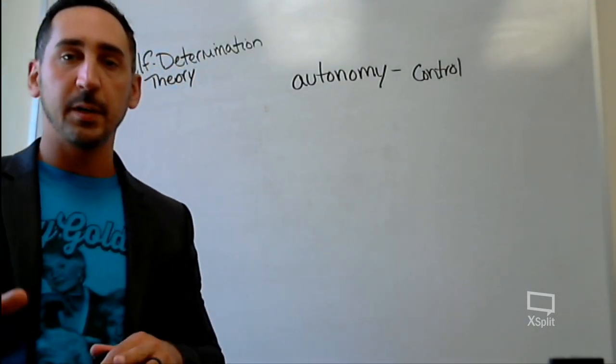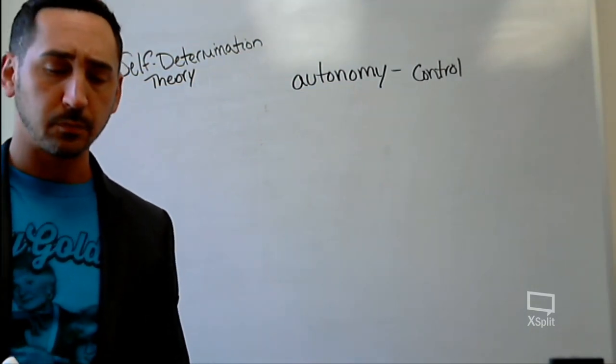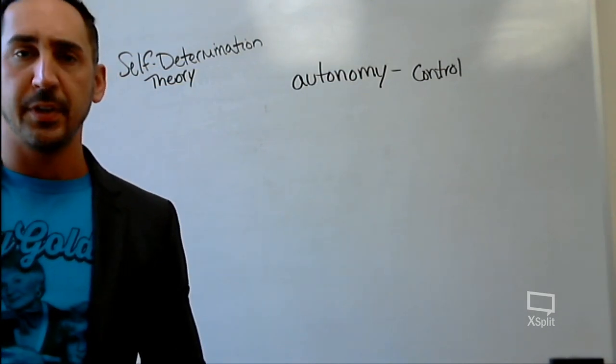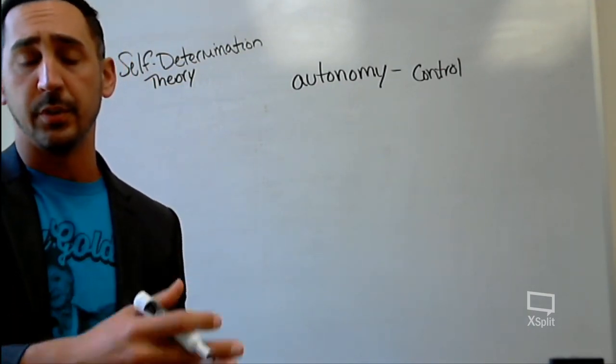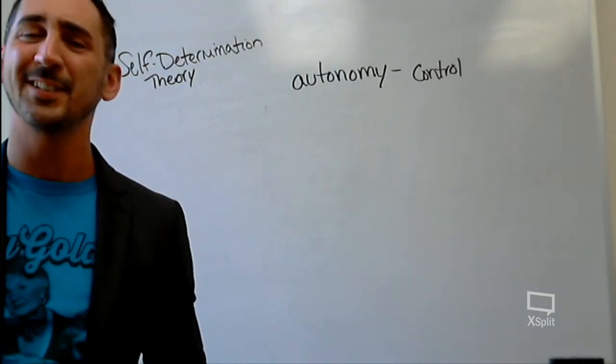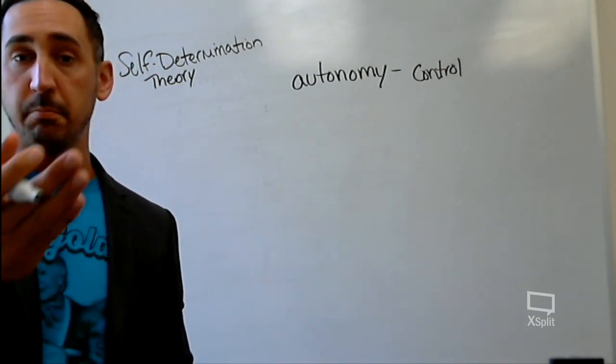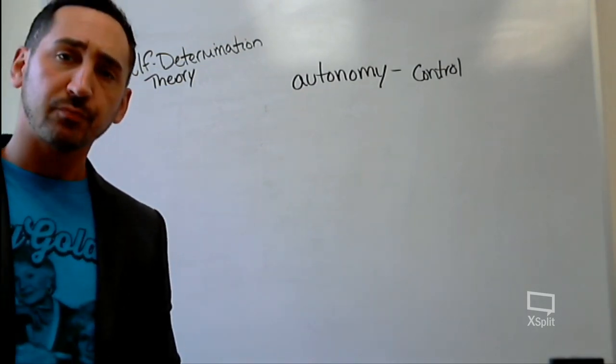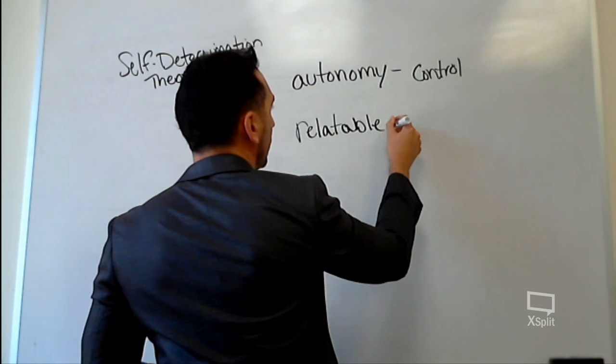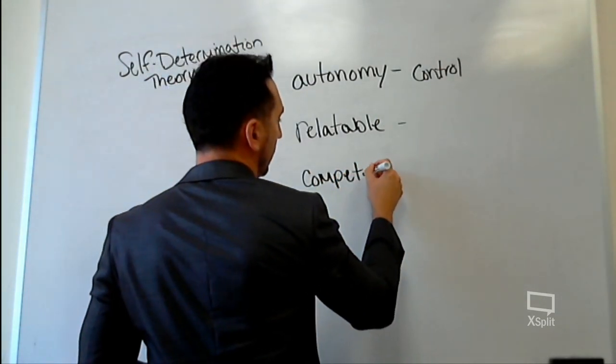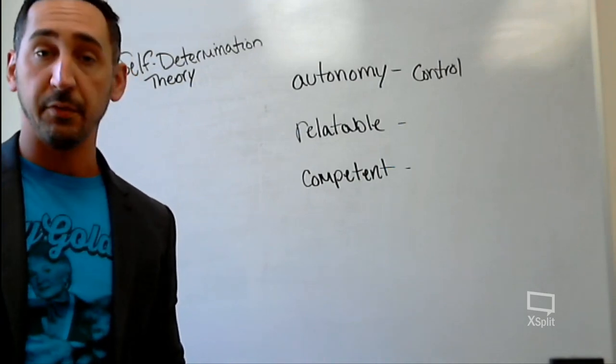The reason I bring up Self-Determination Theory is because I want to give some backing behind what Covey's saying. There's not a whole lot of empirical evidence behind this right now. I mean, I'm sure he has some out there, but in this book, there's not a whole lot provided. But there is a lot behind Self-Determination Theory, and it gives some credibility as to why these seven habits work. Because basically, what Self-Determination Theory says is that if a person is autonomous,